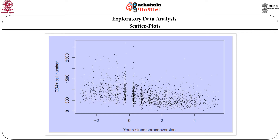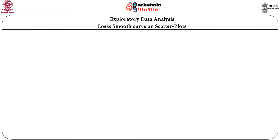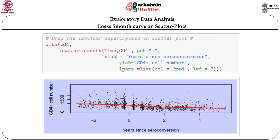We can plot CD4 versus time, which gives us a simple scatter plot. However, as there is a large number of observations, this scatter plot is not very informative. The next thing we can do is add a trend line or smoothing line on the data, which shows how CD4+ cell count behaves with years since seroconversion. This can be done using the scatter.smooth function in R, which is an inbuilt function requiring no extra package.